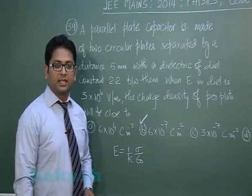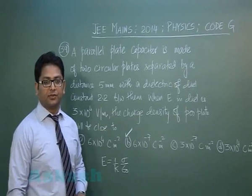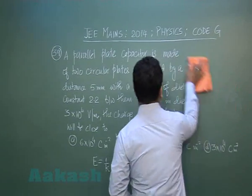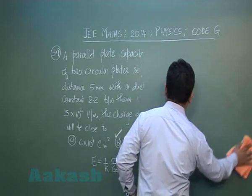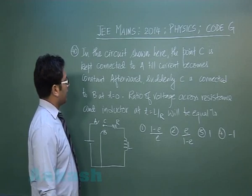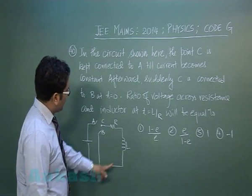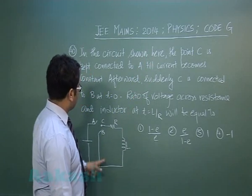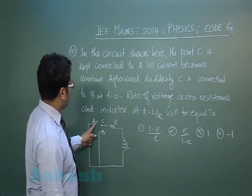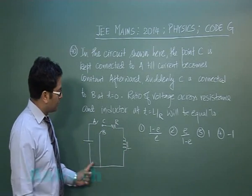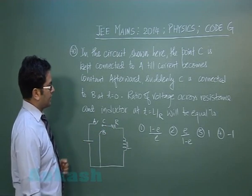Let's go to question number 40, which is from an RL circuit. In the circuit shown, point C is kept connected to A until the current becomes constant. Obviously, that would be an RL charging circuit.